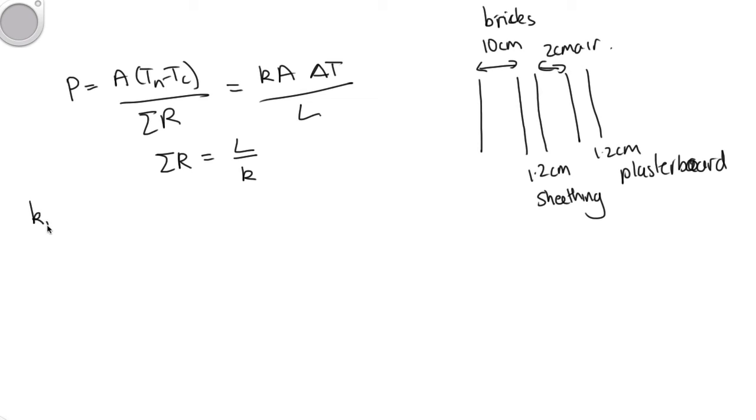k for brick is equal to 0.70 watts per meter per kelvin. k for sheathing is equal to 2.0 watts per meter per kelvin.